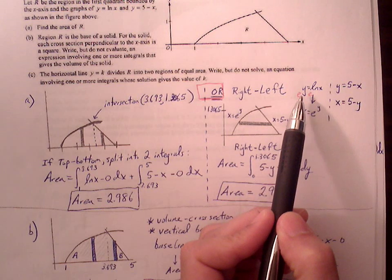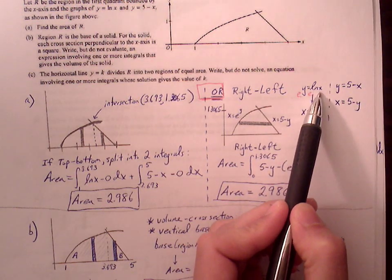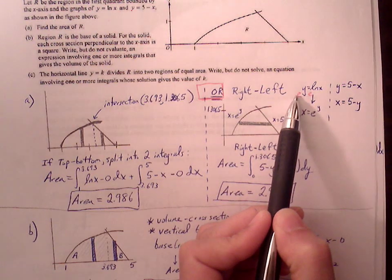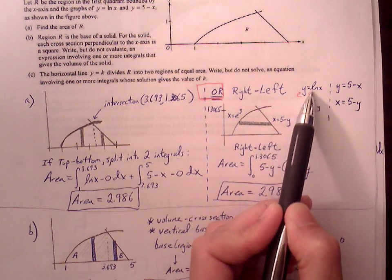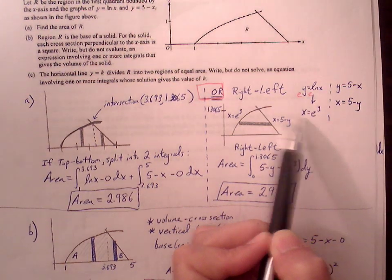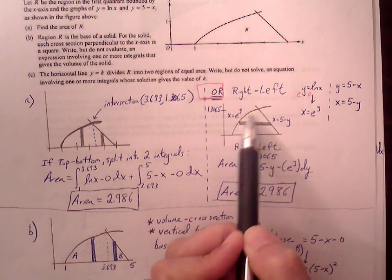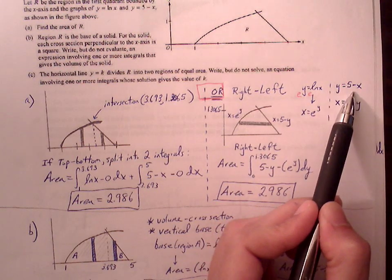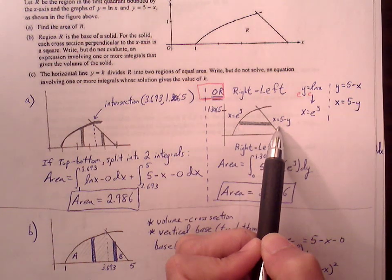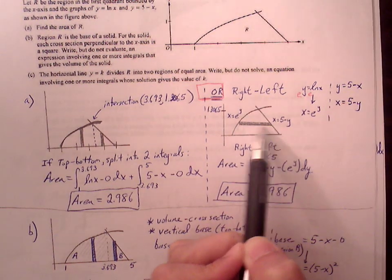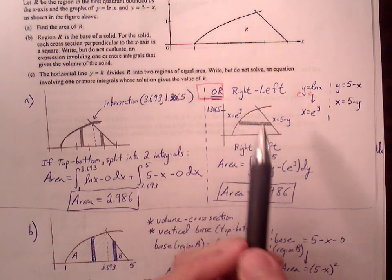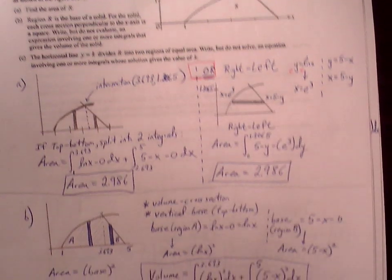To solve for x, I have to get natural log to go away, so I raise both sides with base e. e to the y equals e to the natural log of x. e to the natural log of x is just x, so x equals e to the y. That represents the curve on the left. The y equals 5 minus x is easier. I can just solve for x: x equals 5 minus y, the linear graph on the right. So we do right minus left, which is 5 minus y minus e to the y.